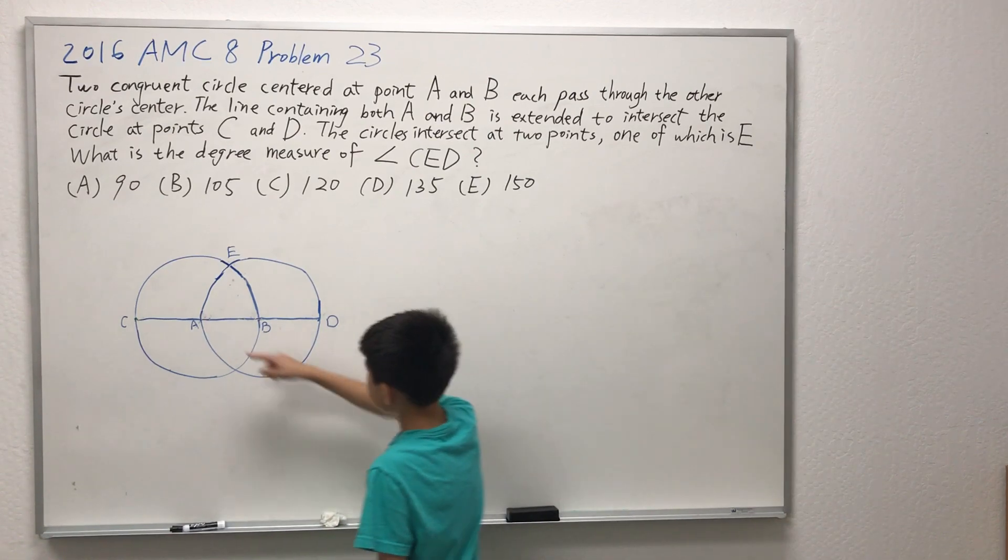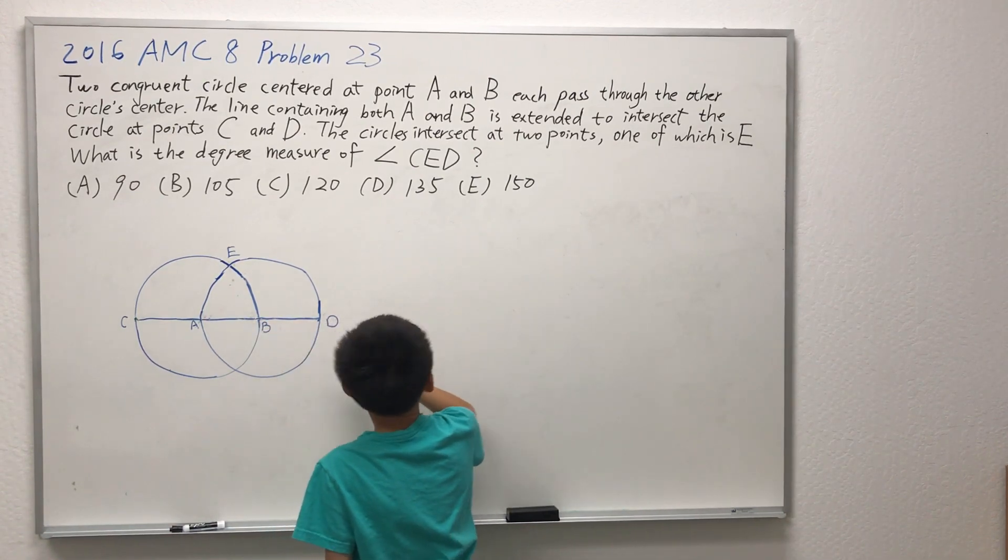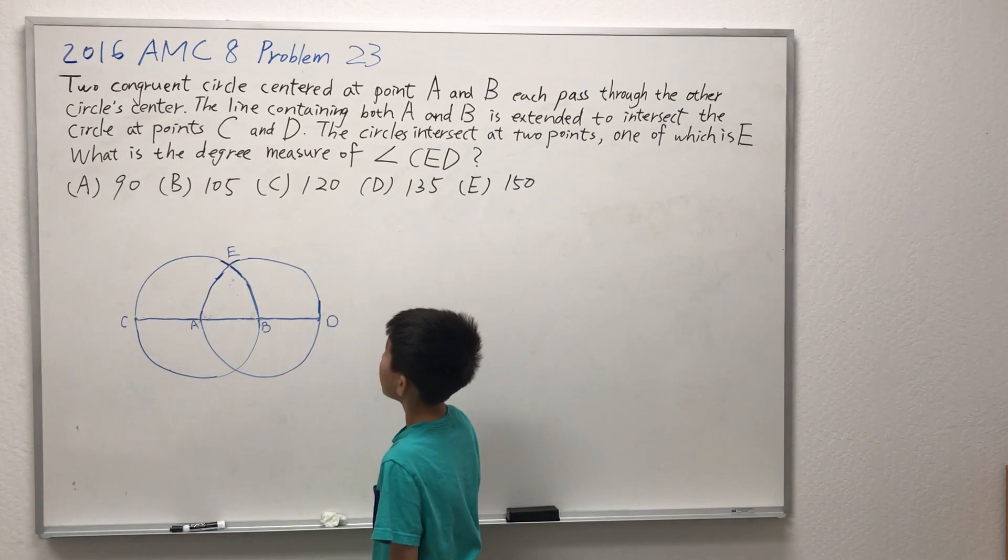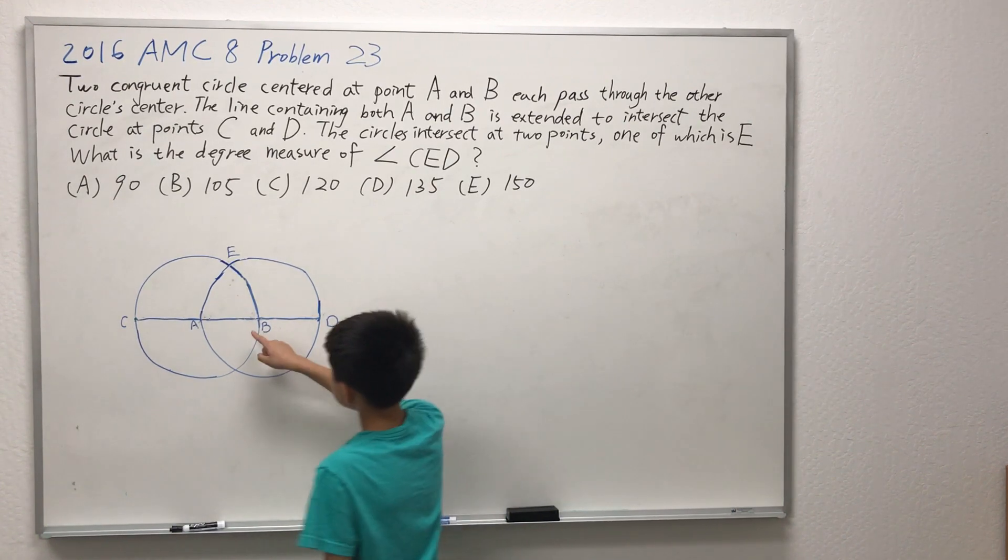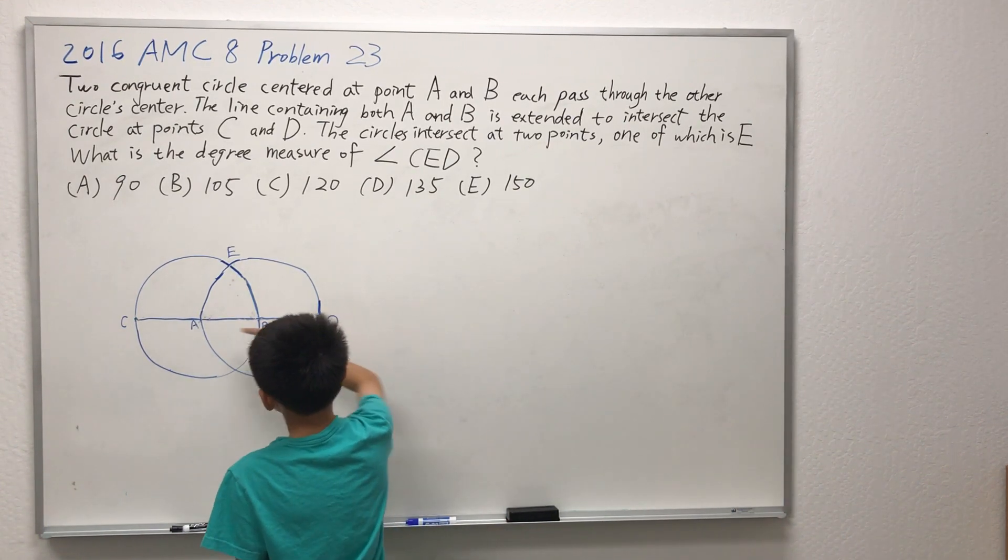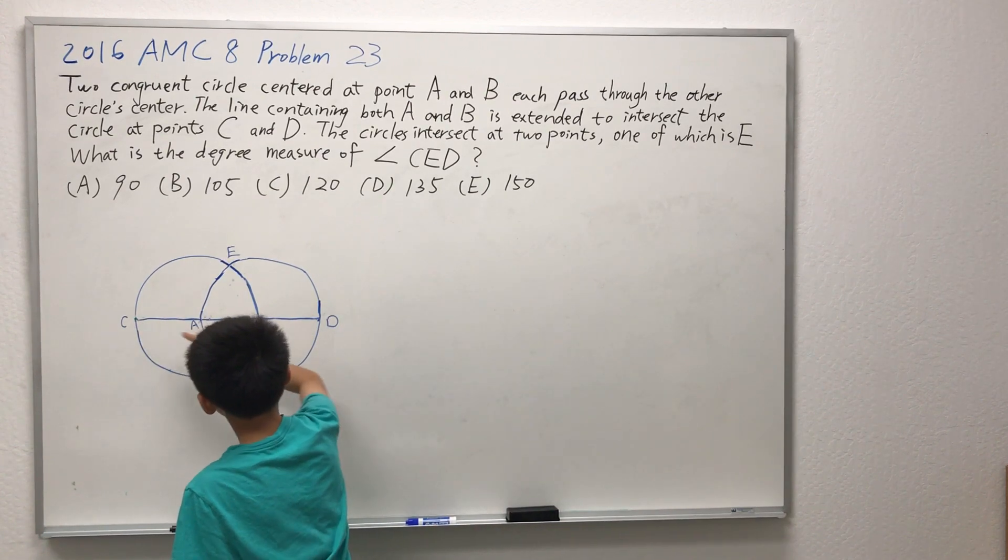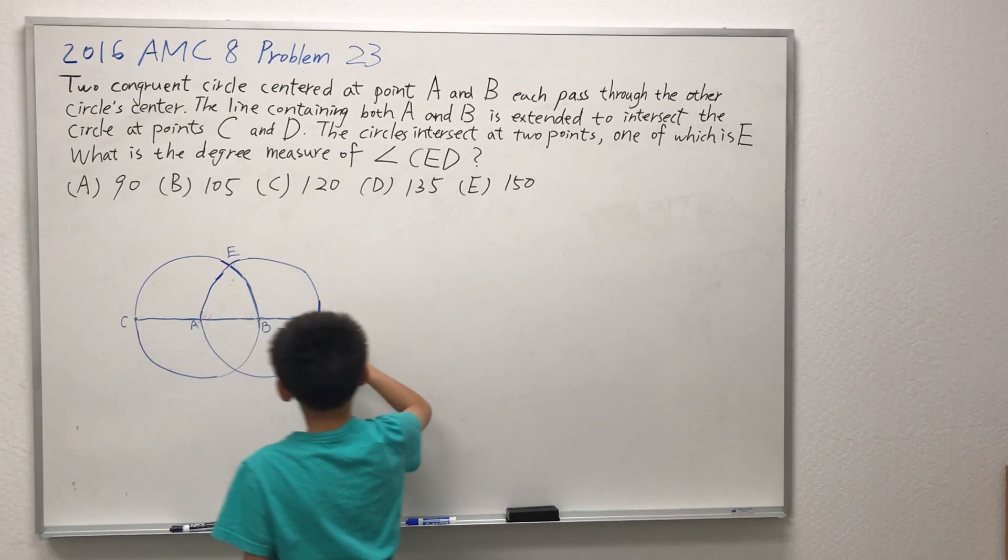The line containing both A and B is extended to intersect the circles at point C and D. So AB is going to be extended this way to go to point C, and AB is going to be extended this way to go to point D.